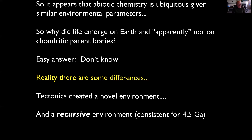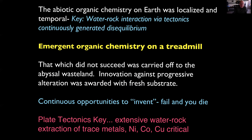Plate tectonics created a very novel, recursive environment on Earth that has been consistent for four and a half billion years. Abiotic chemistry on Earth seems to have been localized but had access to catalysts, and water-rock interactions via tectonics generated continuous deep disequilibrium. It's like emerging organic chemistry on a treadmill: if you didn't succeed, chemistry was carried off to the abyssal wasteland and you get fresh substrate — continuous opportunities to innovate, with failure if you die, but a continuous source of free energy and catalytic phases like nickel, cobalt, copper, and iron if you succeed.